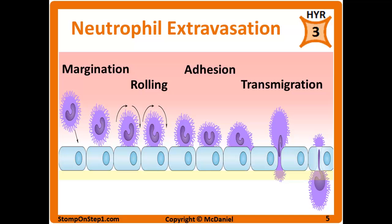Now we can talk about neutrophil extravasation — the process by which neutrophils exit the circulatory system and get into damaged tissue. Macrophages will use this same process later in acute inflammation, but Step 1 questions focus more on neutrophils. Neutrophil extravasation goes through distinct steps. The first is margination: dilation of the vessels causes turbulence that forces neutrophils from the inner portion of the vessel to the peripheral portion, where they bounce into the wall.